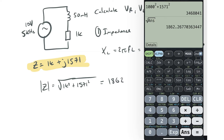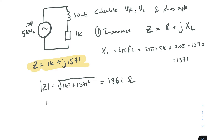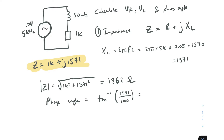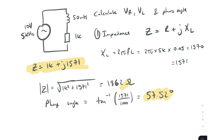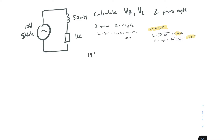Calculating 1000² + 1571² and taking the square root gives us 1862. For the angle, we take the inverse tangent of 1571 divided by 1000, which gives us 57.52°. So our impedance in polar form is 1862 ∠ 57.52°.